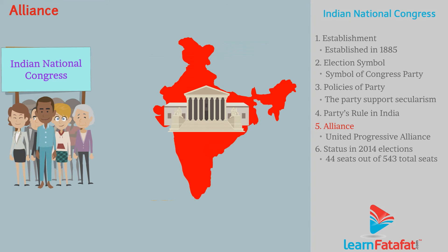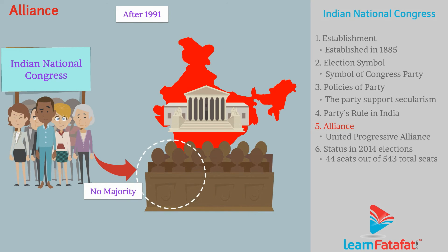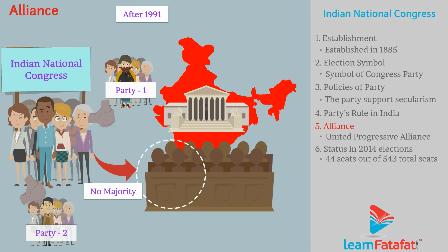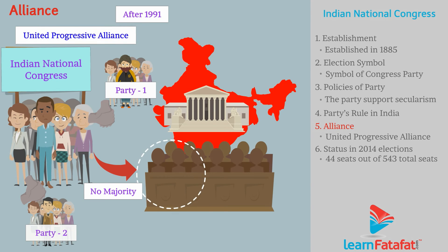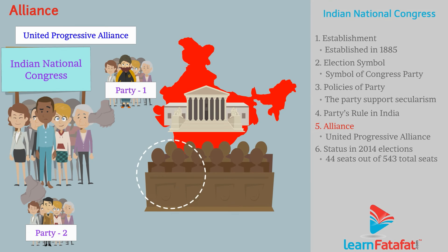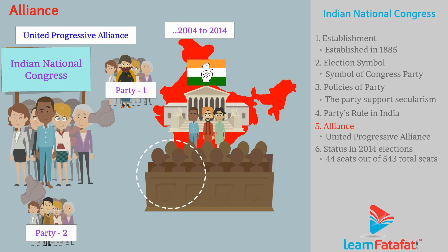Alliance. After 1991, the Congress Party was not able to get a majority, but it got the support of other parties. In this way, it formed the United Progressive Alliance. Thus, the party was again in power from 2004 to 2014.